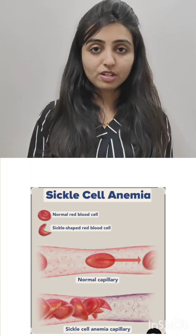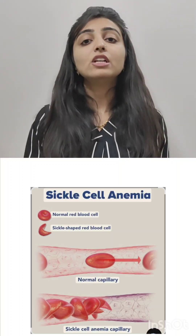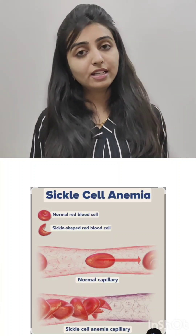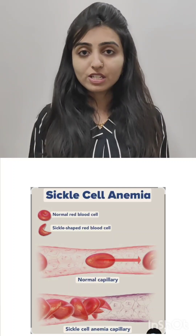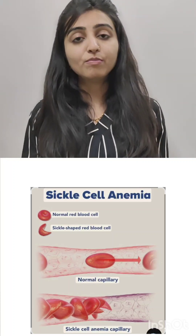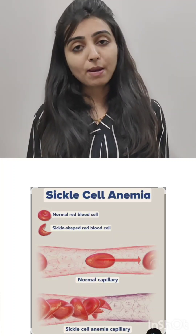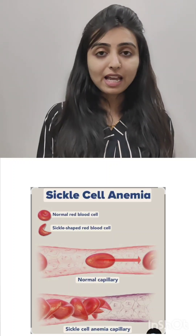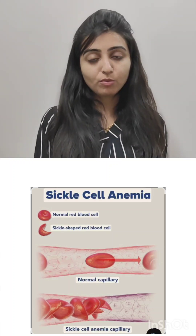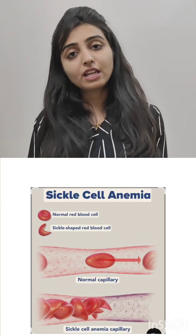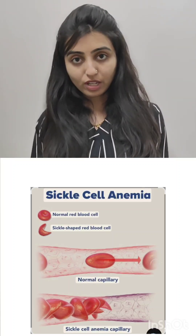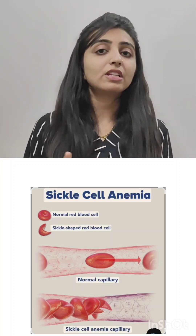There is a continuous cycle of sickling and desickling, which leads to damage to the cell membrane of the RBC. This damaged RBC is lysed within the vessel, causing intravascular hemolysis. There is also extravascular hemolysis occurring in the spleen.